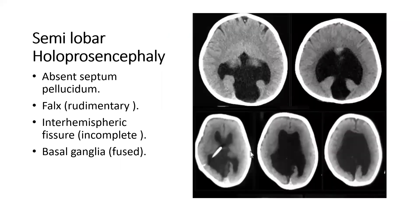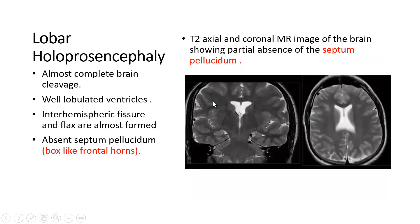In semilobar holoprosencephaly, also called H-shape ventricles, there is absence of the septum pellucidum, rudimentary falx, incomplete interhemispheric fissure, and fused basal ganglia. In lobar holoprosencephaly, there is almost complete brain cleavage and well-lobulated ventricles, but two signs are present: in coronal section, box-like frontal horns, and in axial section, incomplete septum pellucidum.